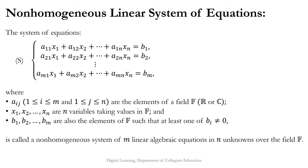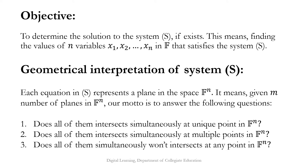For convenience, we will take the field F to be either the set of all real numbers or the set of all complex numbers. Our objective is to determine the solution to the system S if it exists. The solution means the values of variables x₁ through xₙ in F that satisfy S. Since every equation in S represents a plane surface in the space Fⁿ, geometrically we are interested in finding the point of intersection of all m planes in Fⁿ. Such planes may intersect at a unique point, at infinitely many points, or may not intersect at all.